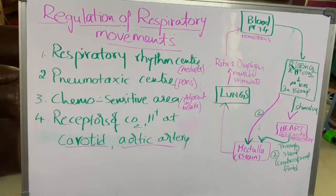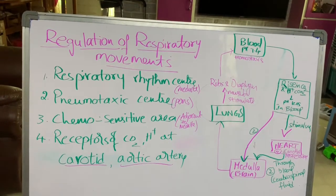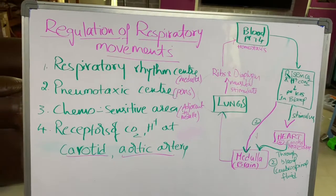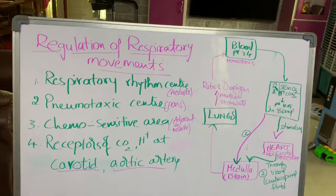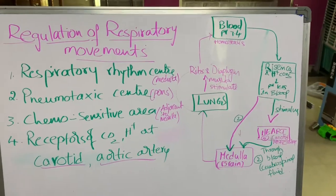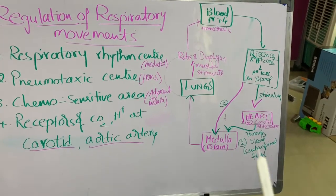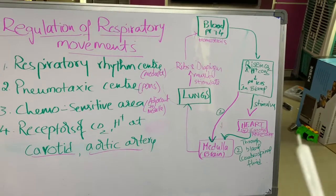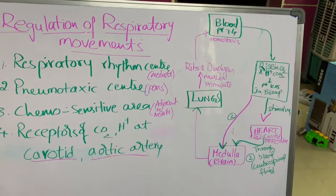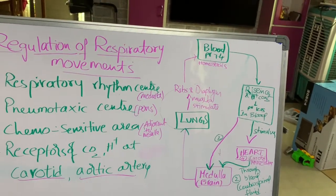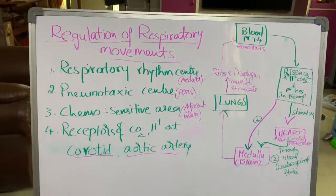So why do we get suffocation when we enter into caves? Because the oxygen supply is low, carbon dioxide concentration becomes more in the blood, and we are not supplied with enough oxygen. The CO2 has to be immediately removed, so a signal is sent to the medulla oblongata — the respiratory rhythm center — which gives information to the ribs and diaphragm to take in more oxygen. That's why we move to a fresh area and breathe in lots of oxygen. Thank you.